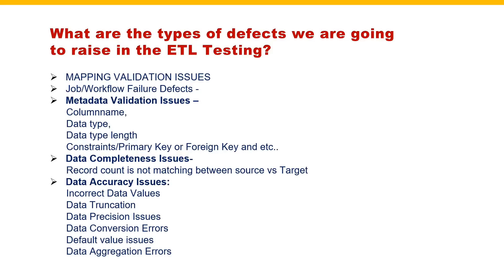Once you prepare the test cases, the developer has to develop the job and unit test it, then move it to the test environment. You have to run the workflow. There are two things: it can be successful or it can be a failure. If the workflow is failed, then you are going to raise a defect. That is one type of defect. Sometimes you may also see connection issues - incorrect connection has been provided in the workflow. That kind of issue you can create as a defect under the job or workflow failure category.